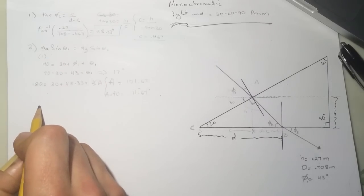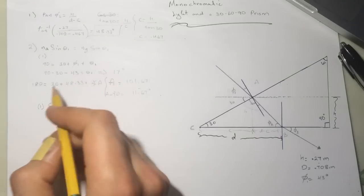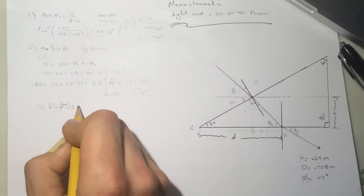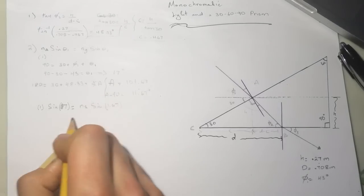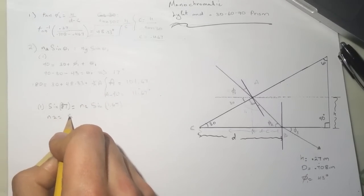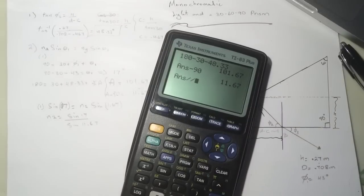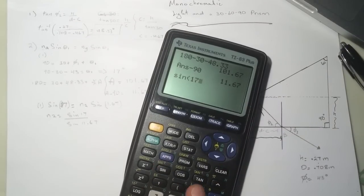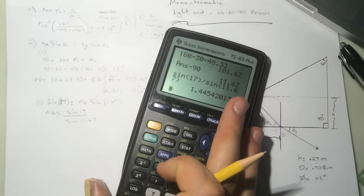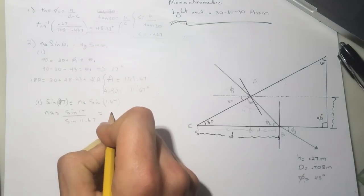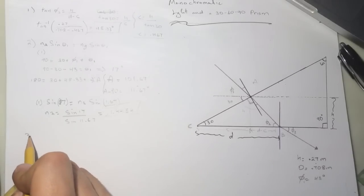Since the surface normal is 90 degrees, A minus 90 degrees gives us 11.67 degrees as the refraction angle at the exit face. Applying Snell's law: n1 = 1, sine(17°) equals n2 times sine(11.67°). So n2 equals sin(17°) divided by sin(11.67°), which gives 1.4454. So n equals 1.4454.